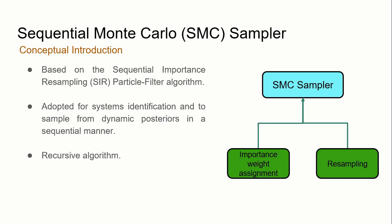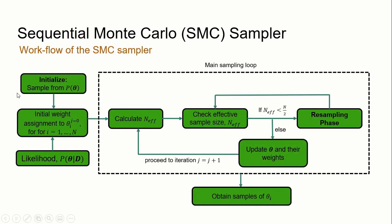The SMC sampler utilizes two main concepts: importance weight assignment via importance sampling, and a resampling technique. In the sequential Monte Carlo sampler, we initialize by sampling n samples from the prior. Initial weights are then assigned to each sample, defined as the likelihood value evaluated at the individual sample — for example, the weight of theta_1 is p(theta_1 | d). The effective sample size is then calculated as the reciprocal of the sum of squares of the initial weights.